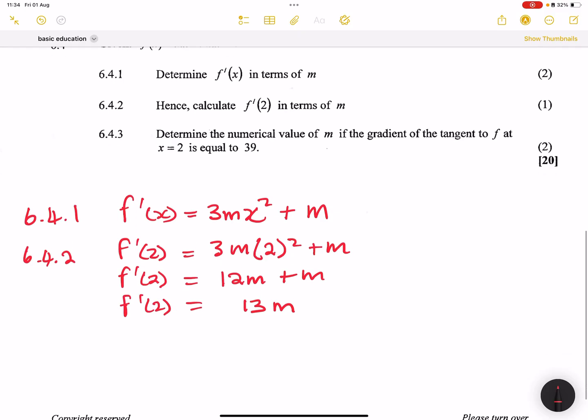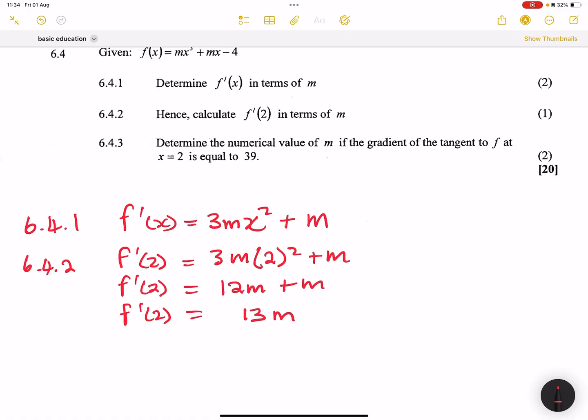For the next one they say to us, determine the numerical values of m if the gradient of the tangent of f at x equals 2 is equal to 39. Now I want you to note, firstly we're looking for the value of m.